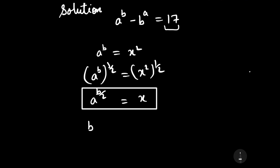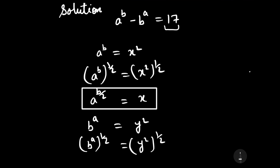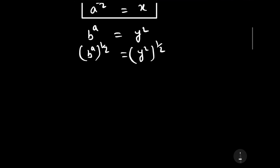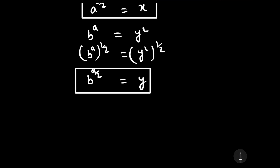Similarly, let us consider b to the power a is equal to y squared. Then b to the power a whole power 1 by 2 can be written as y square whole power 1 by 2, which gives b to the power a by 2. It means the value of y is equal to b to the power a by 2, and the value of b to the power a is equal to y squared.